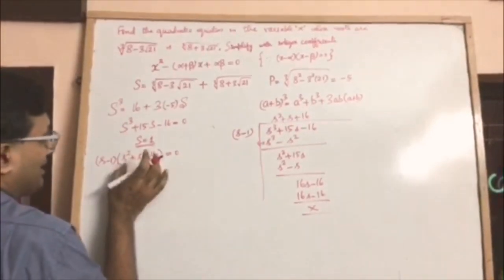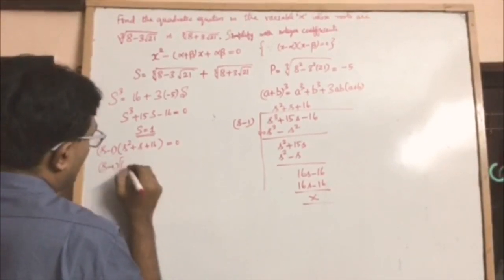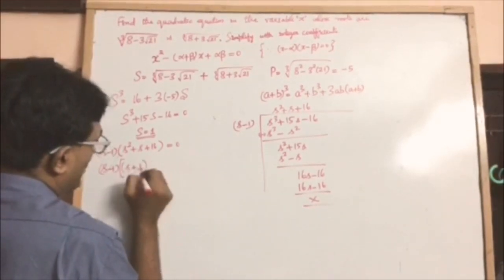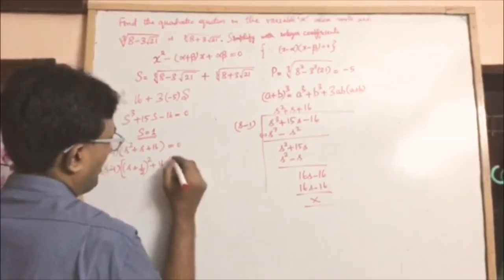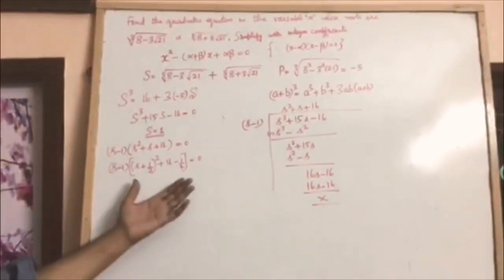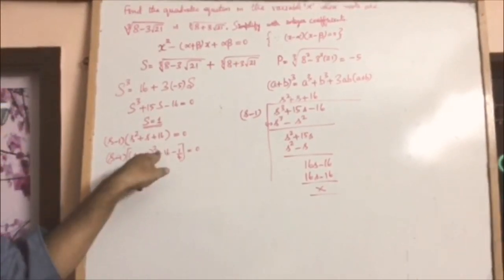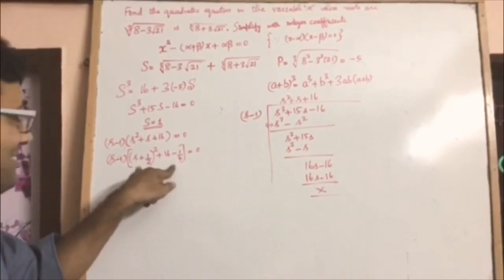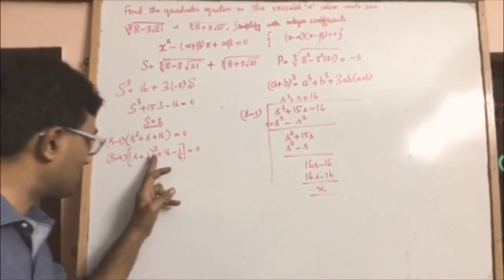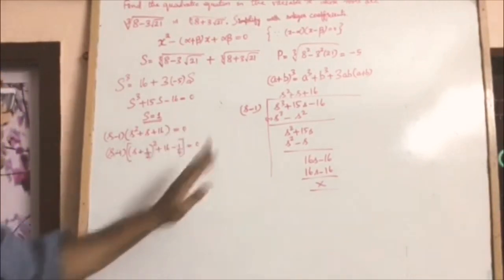We can complete the square on the second factor: (s minus 1) times (s plus one-half) squared plus 16 minus one-quarter, equals 0. Now if s is any real number, (s plus one-half) squared is always greater than or equal to 0, so this term — a square of a real number plus a positive real number — can never equal 0. Therefore s equals 1 is the only possible real solution.